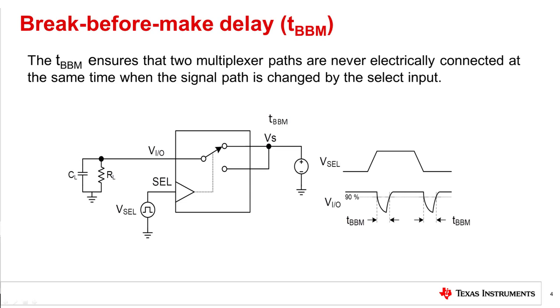Break before make delay is a safety feature that prevents two inputs from connecting when the device is switching. The output first breaks from the ON state switch before making the connection with the next ON state switch. The time delay between the break and the make is known as break before make delay, or T-BBM. In this circuit, T-BBM is measured from the time VIO drops to 90% of its ON state value until the time that it rises again to 90% of its ON state value. Without break before make, you could see unwanted glitches in your output.